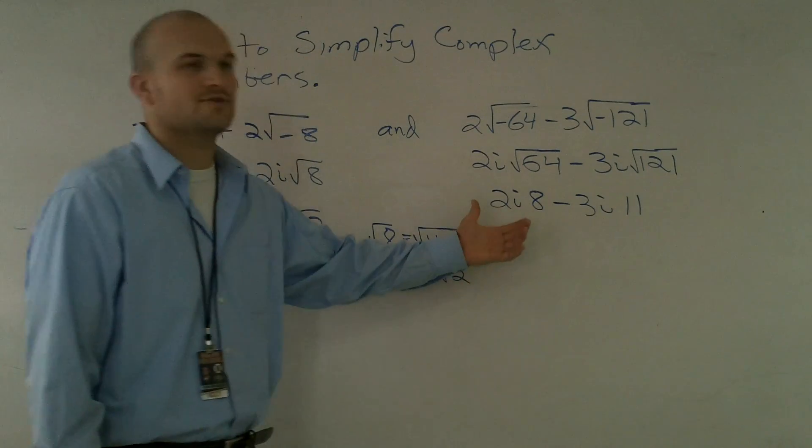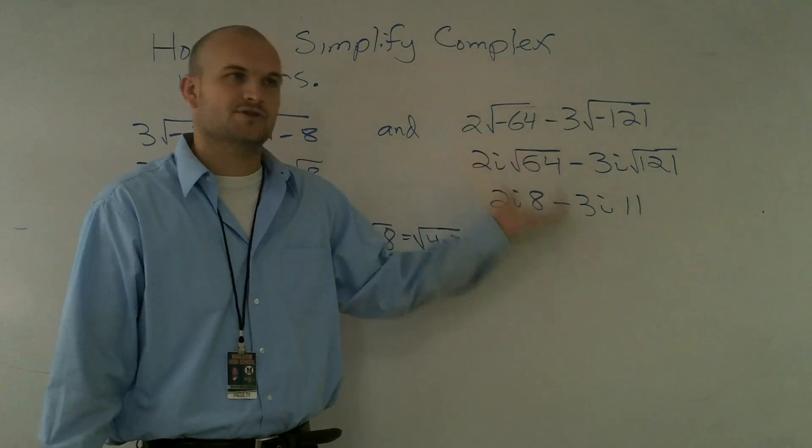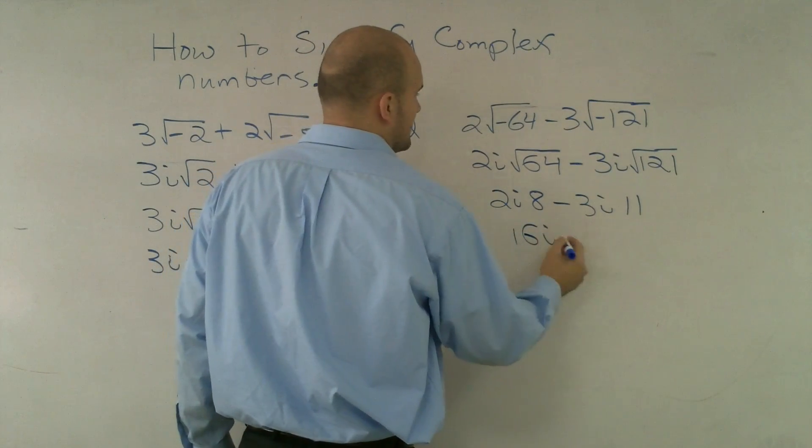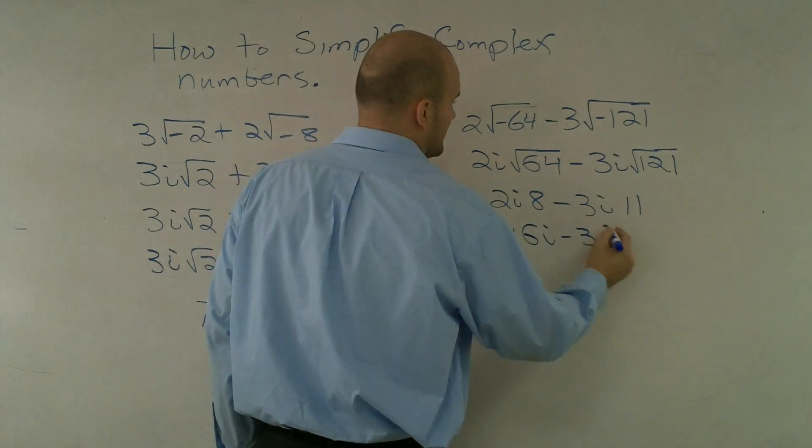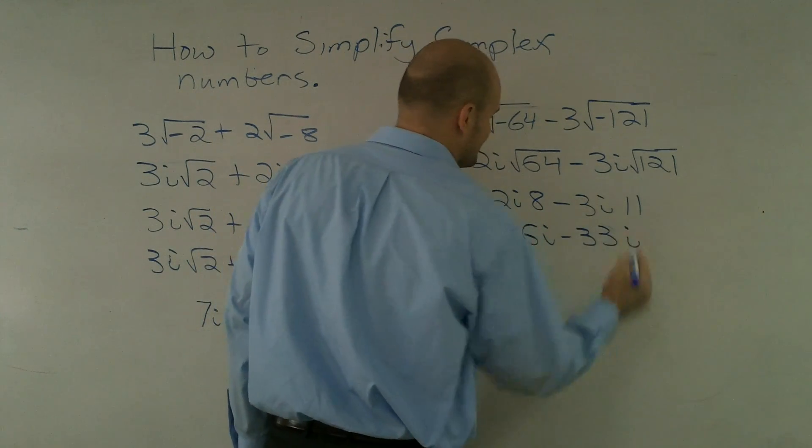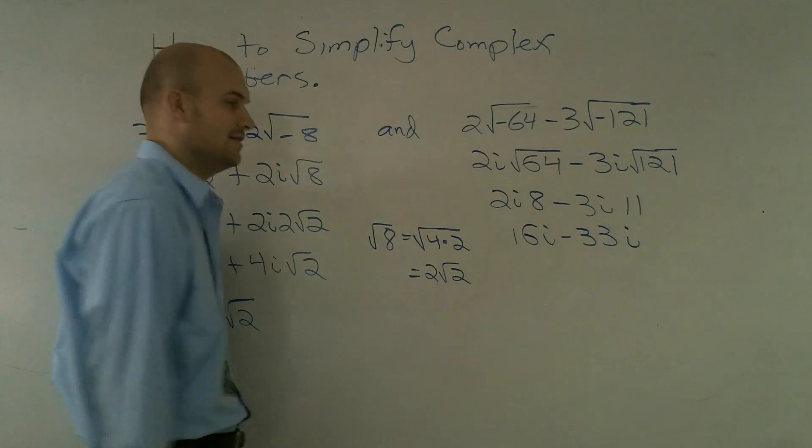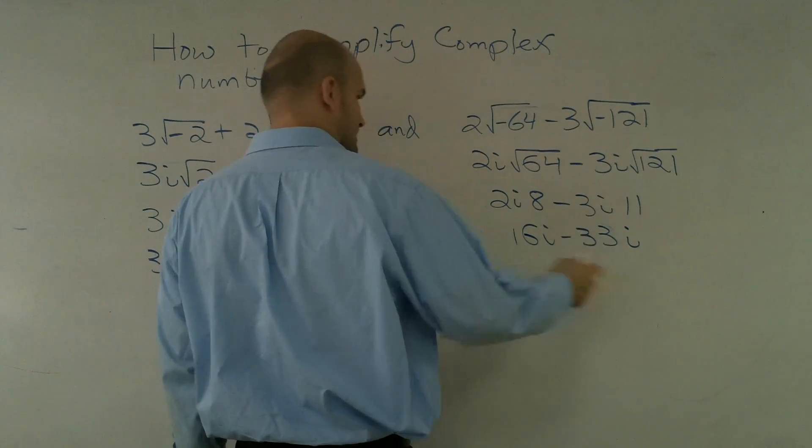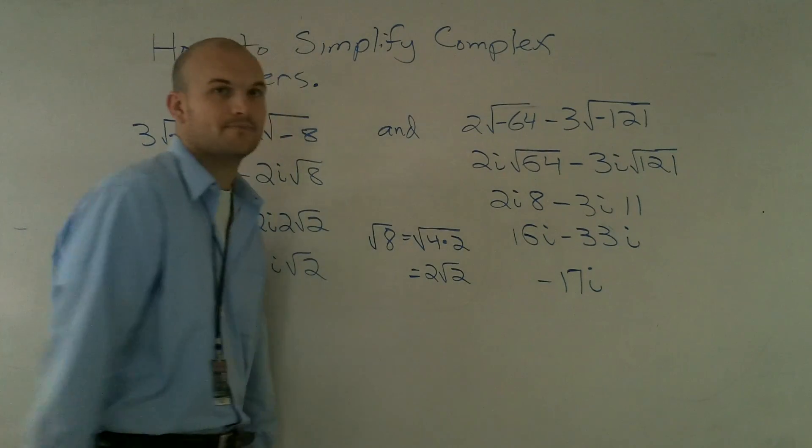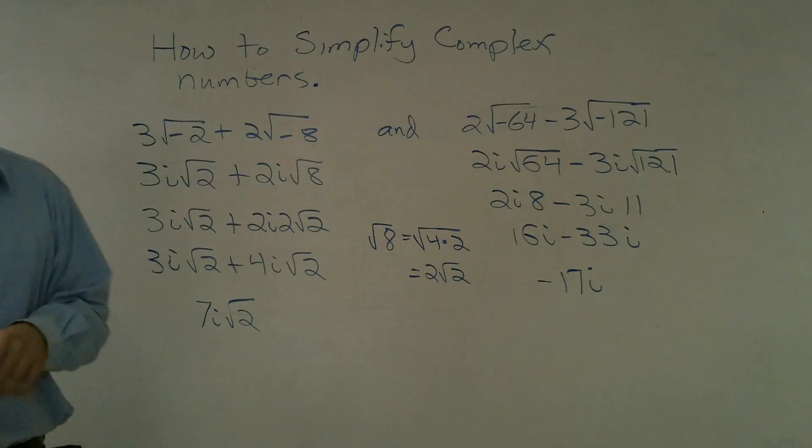And I'm just showing you... You can easily do this multiplication right here. And I'm just showing you just so you guys can see it step by step. 2 times 8 becomes 16i minus 33i. 33i. Alright, and then you'll get a negative 17i. That's how you simplify complex numbers.